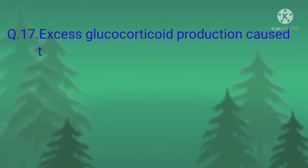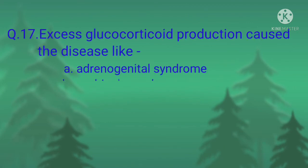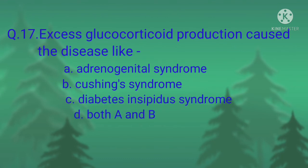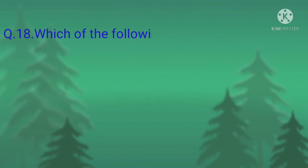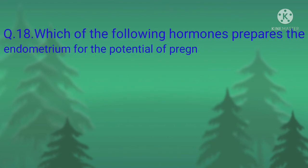Question number seventeen: excess glucocorticoid production causes a disease like — option A, adrenogenital syndrome; option B, Cushing's syndrome; option C, diabetes insipidus syndrome; option D, both A and B. The correct option is option B, Cushing's syndrome.